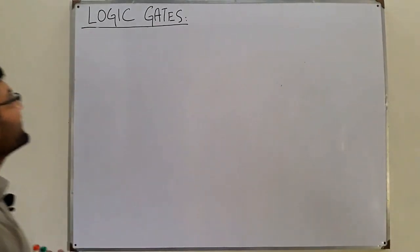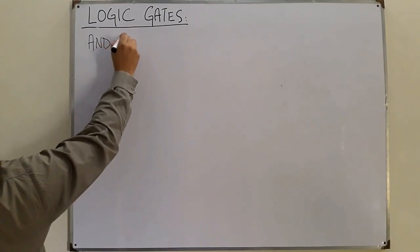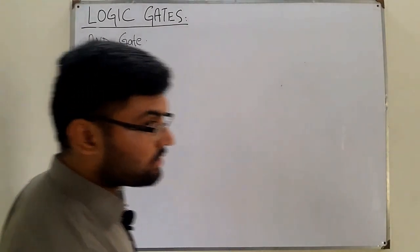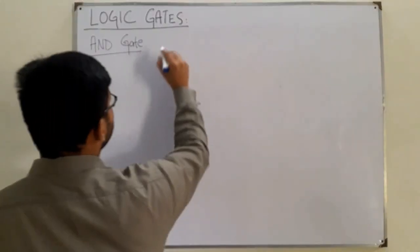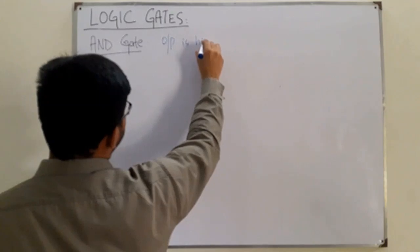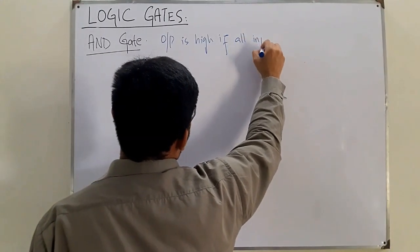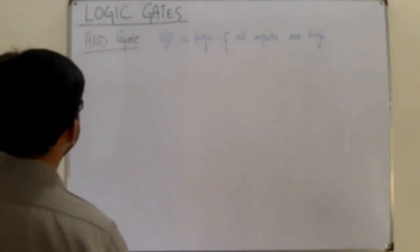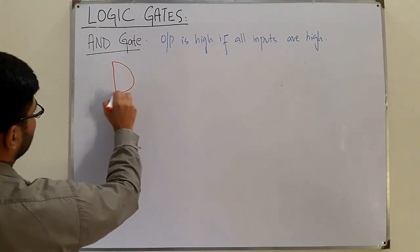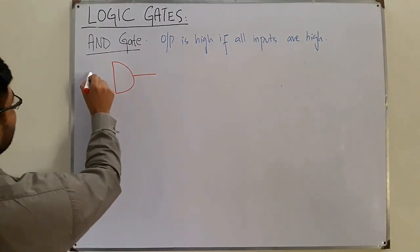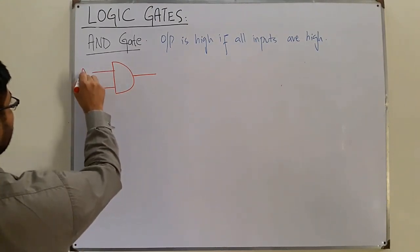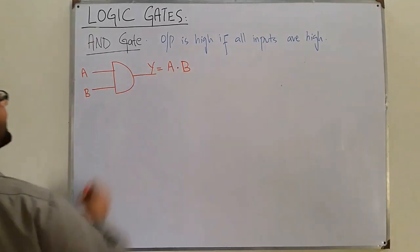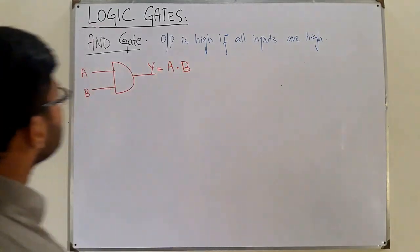The next gate is the AND gate. The AND gate is a multi-input gate, and its output is high only if all inputs are high. The symbol for the AND gate has a flat input side and a curved output side. For two inputs A and B, the output function Y equals A · B, where the dot represents the AND operation.